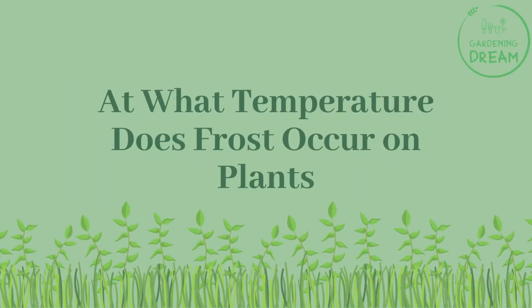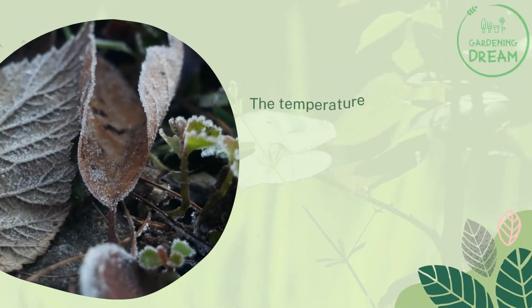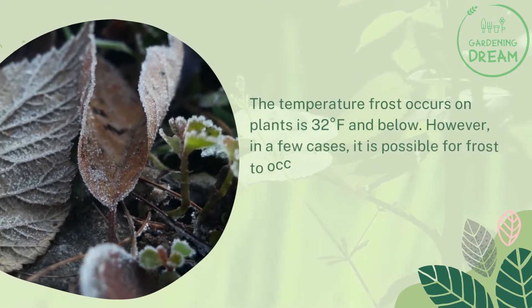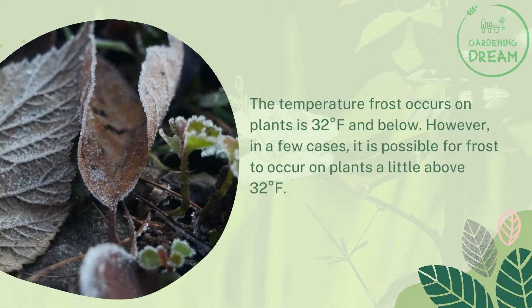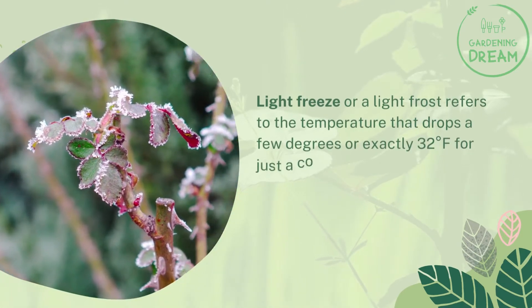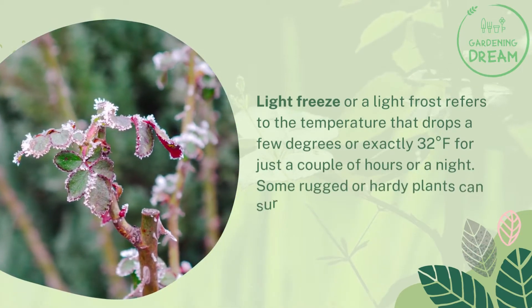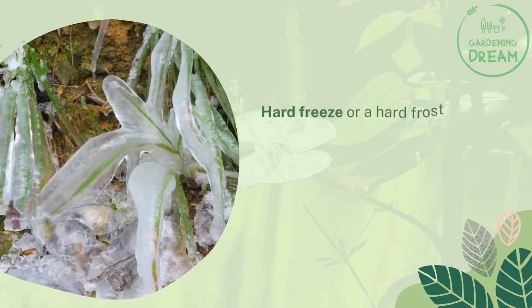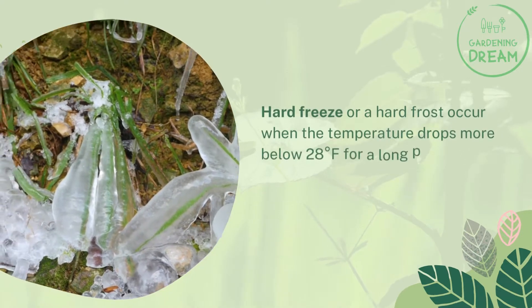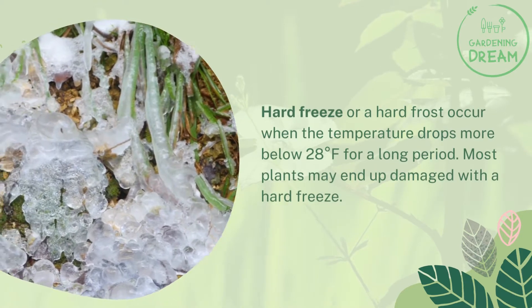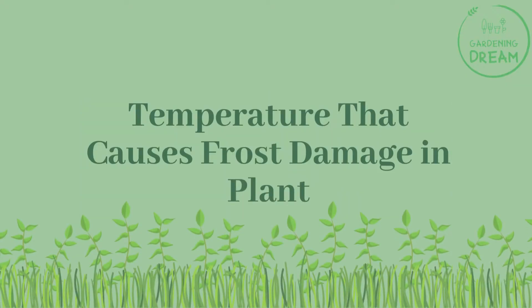The temperature at which frost occurs on plants is 32 degrees Fahrenheit and below, though in a few cases frost can occur a little above 32 degrees Fahrenheit. A light freeze or light frost refers to temperatures that drop a few degrees to exactly 32 degrees Fahrenheit for just a couple of hours or a night — some hardy plants can survive this. A hard freeze or hard frost occurs when the temperature drops below 28 degrees Fahrenheit for a long period, and most plants may end up damaged.